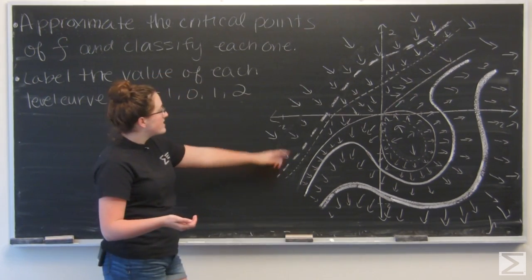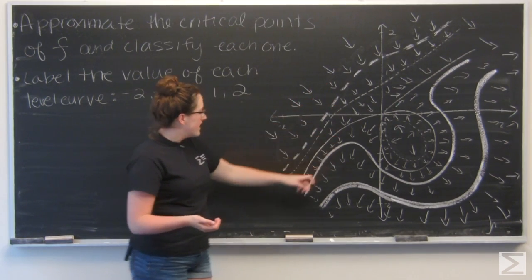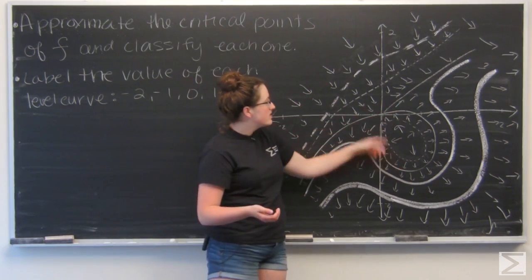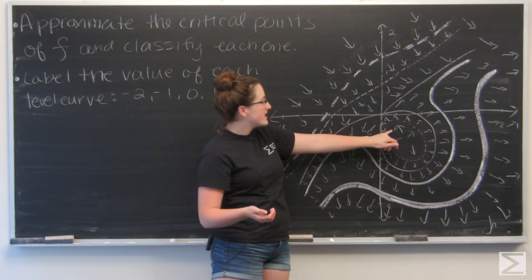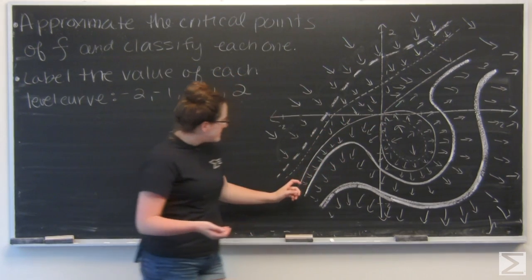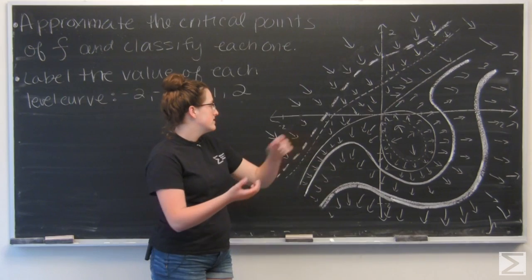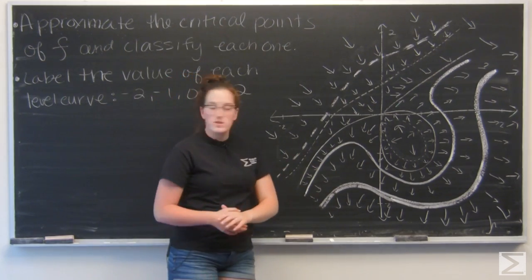So I have a thick dashed line, a thin dashed line, a thin solid line, that thin dashed line again, and then a thick and a thicker level curve.